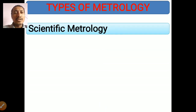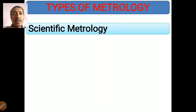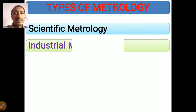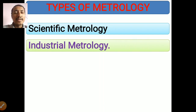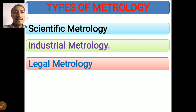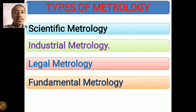Next are the types of metrology. There are four types: first, scientific metrology; second, industrial metrology; third, legal metrology; and fourth, fundamental metrology. Let us look at each one by one.